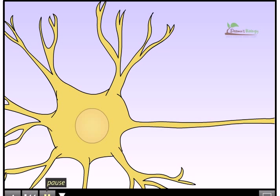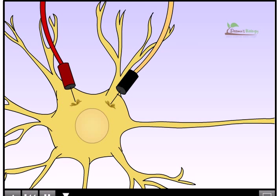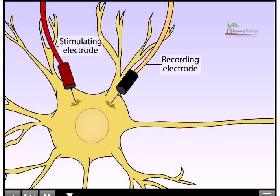In order to study how action potentials are generated, we will first insert two electrodes into the neuron, one to record the membrane voltage and another to inject current that can be used to push the membrane voltage toward more positive or depolarizing, or more negative or hyperpolarizing voltages.